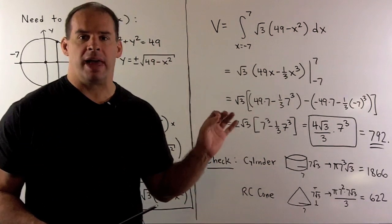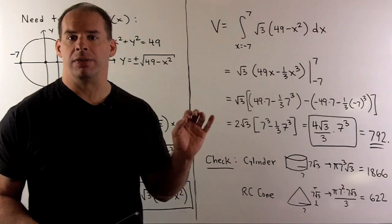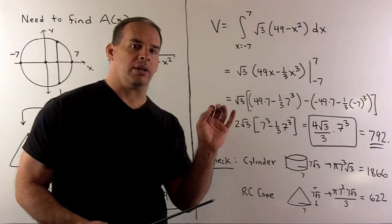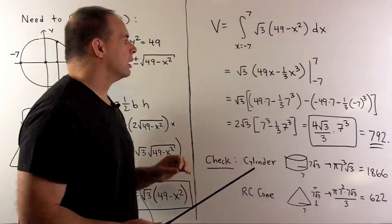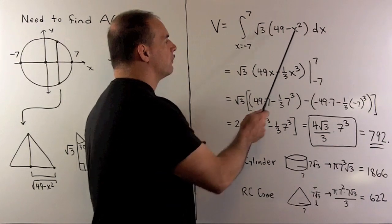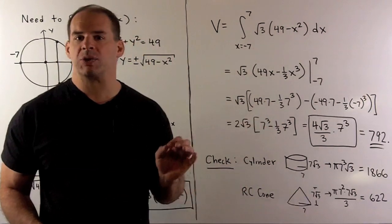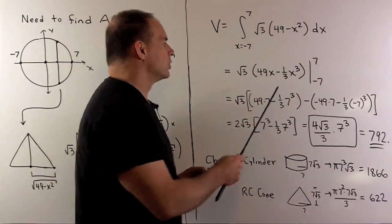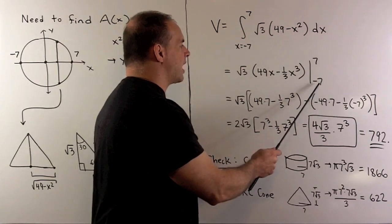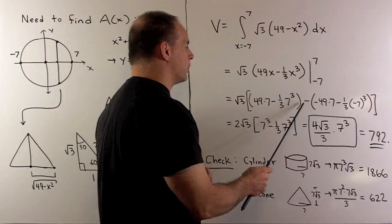Now, to evaluate that, we just appeal to the fundamental theorem of calculus. We find an antiderivative. We evaluate the limits and take the difference. For an antiderivative, for the 49, we attach an x. For x squared, we add 1 to the exponent flip over. So, we get 1 third x cubed. Now, we evaluate at 7 and minus 7. Take the difference.